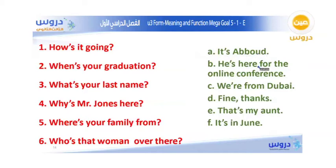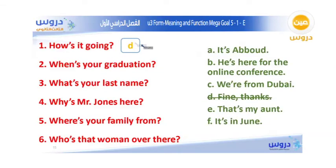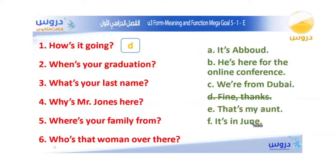The answers are: it is Abud, he is here for the online conference, we are from Dubai, fine thanks, that's my aunt, it is in June. How is it going? — Fine, thanks. When is your graduation? — The only answer indicating time is: It is in June.